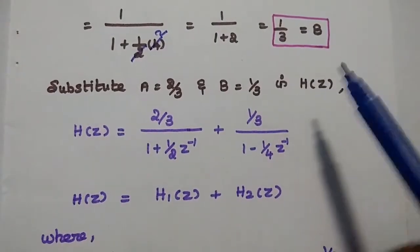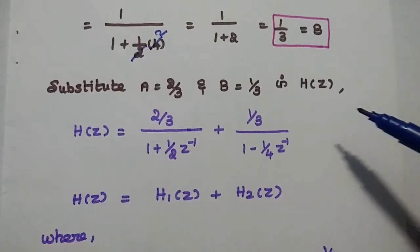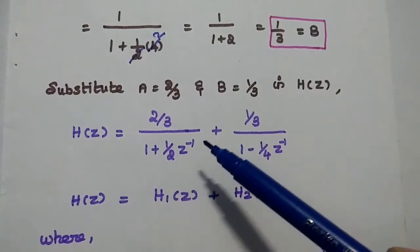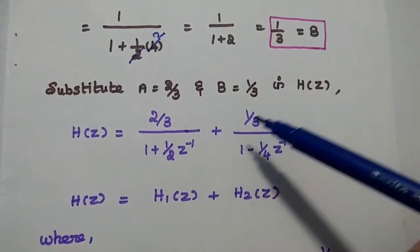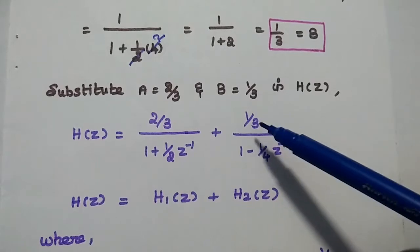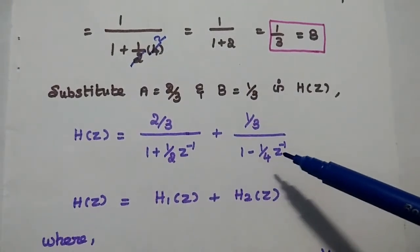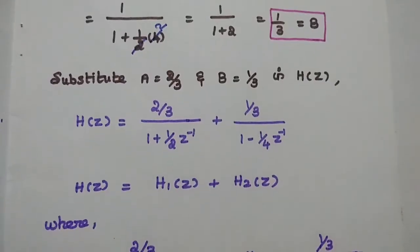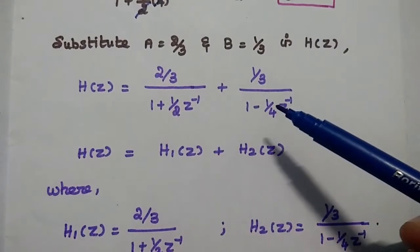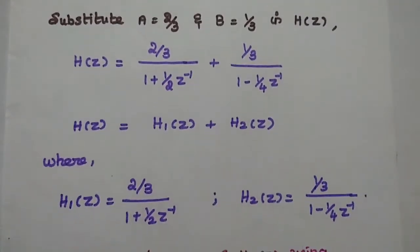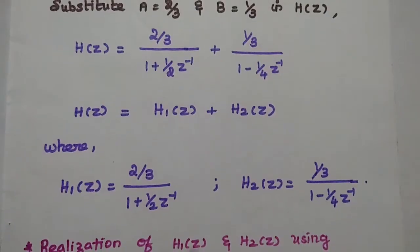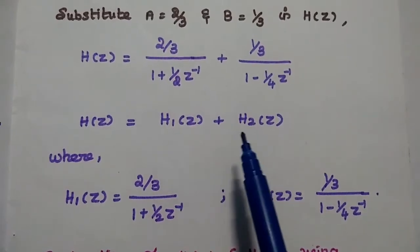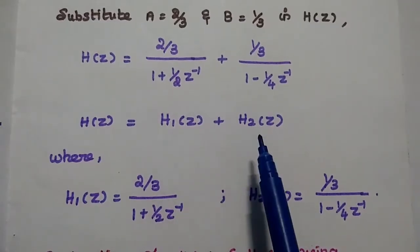H of Z is equal to (2/3) divided by (1 plus 1/2 Z power minus 1) plus (1/3) divided by (1 minus 1/4 Z power minus 1). We consider the first term as H1 of Z and the second term as H2 of Z. The first step is now completed — H of Z has been expressed as a sum of several system functions.